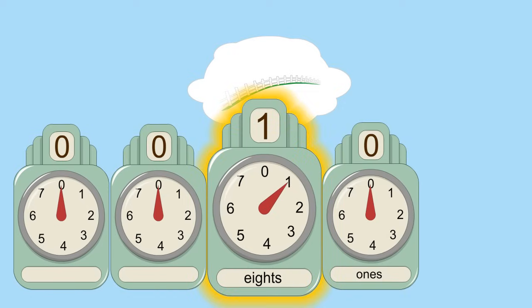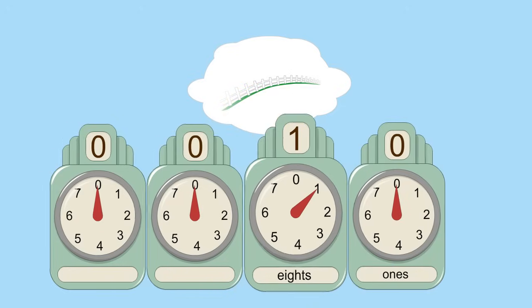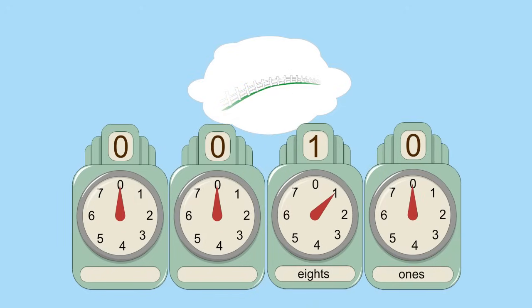So the second column counts the number of eights. Therefore, in octal, the number following seven is one zero, which looks just like the decimal number ten. After octal ten comes octal eleven, twelve, and so on until we get to octal seventeen. At that point, we go to octal twenty. The second column has now counted two eights or sixteen.